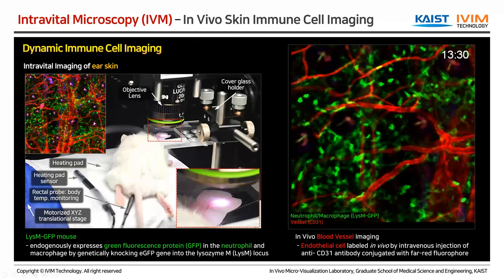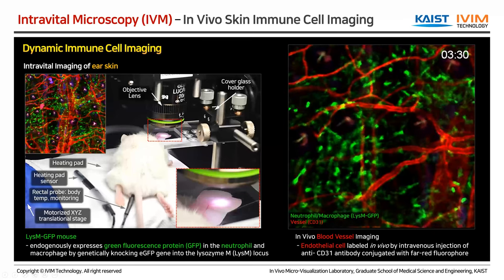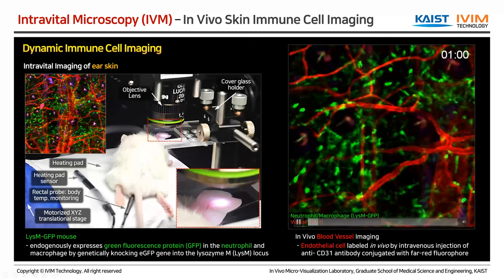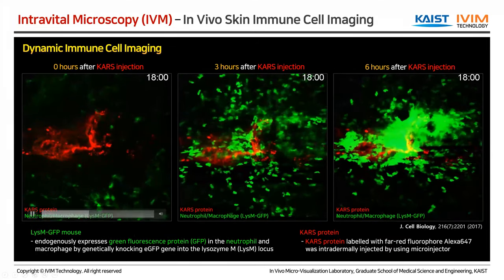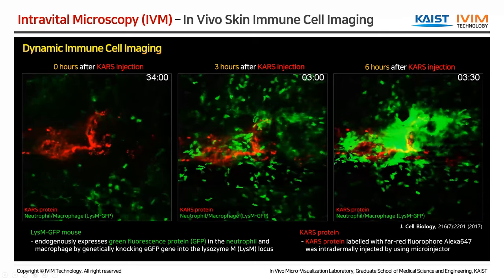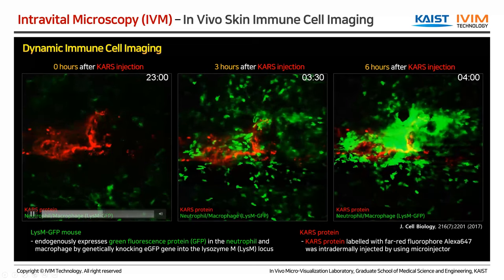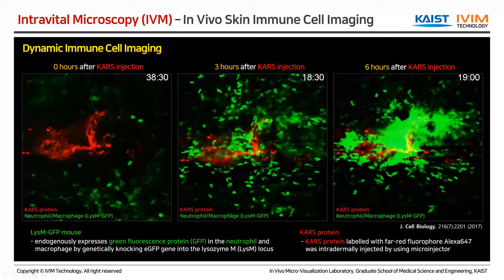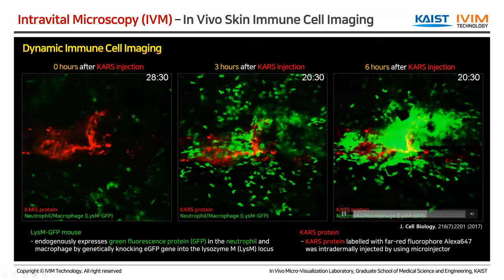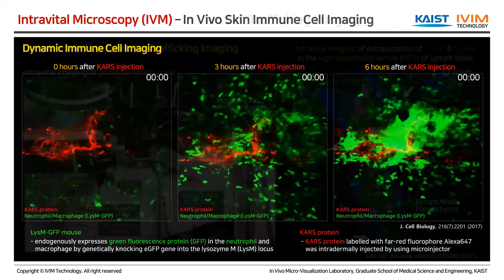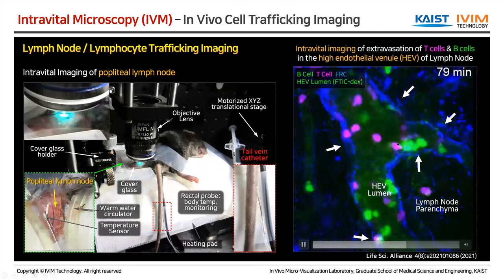For ear skin imaging, we provide a U-shaped glass bracket on which the transparent cover glass is placed and the ear skin attached. In one published example in JCB, we used a microinjector to inject a very small amount of red fluorescent protein — KLS protein labeled with red fluorescent dye — into the skin, then observed recruitment of neutrophils and macrophages for up to 6 hours. For lymph node imaging, we visualize T cells and B cells in the lymph node — here showing preparation for popliteal lymph node imaging.